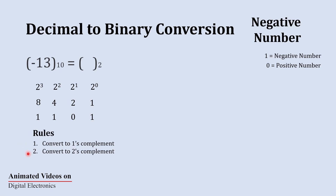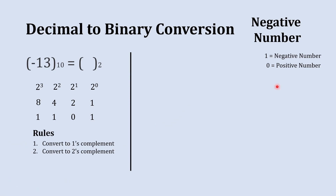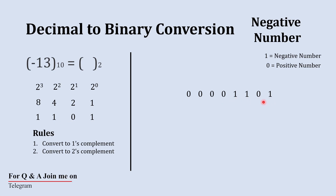Before moving ahead, I'd like to point out a very important thing: the representation of the number is in how many bits. Here the number is represented in 4 bits. You can represent a number in 4-bit, 8-bit, 16-bit, or 32-bit. Here we are representing this same number in 8-bit manner. I'll tell you why I'm taking 8-bit a little later.